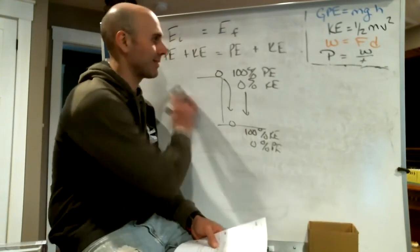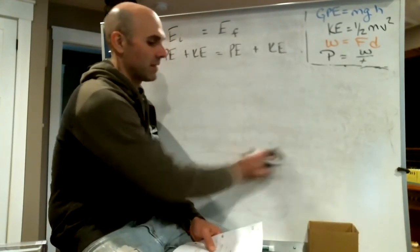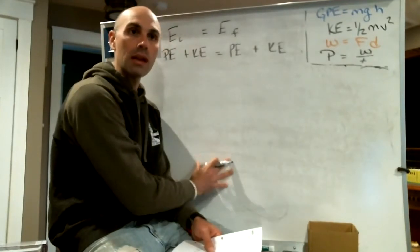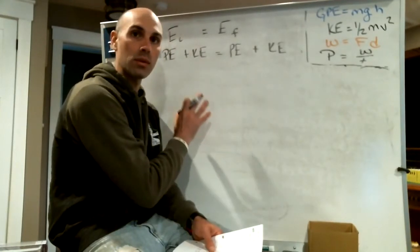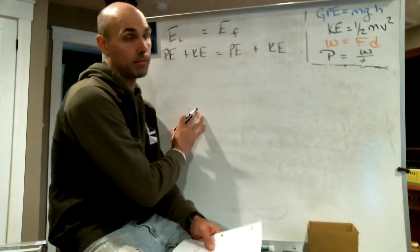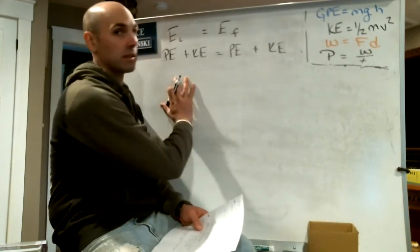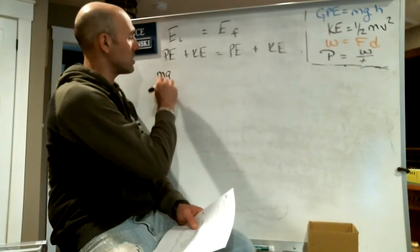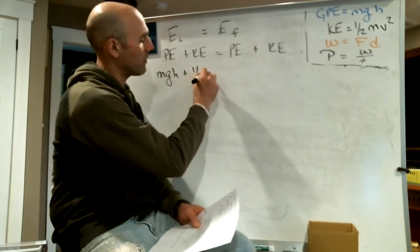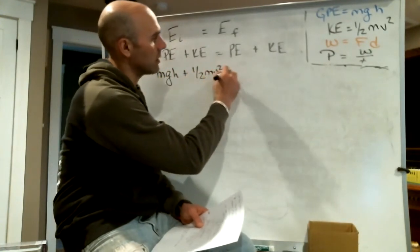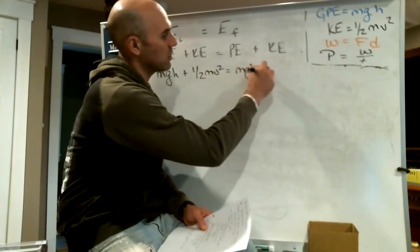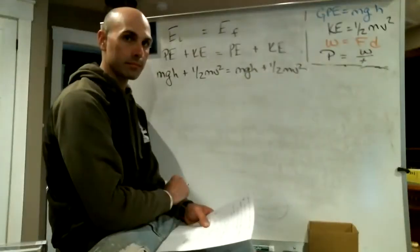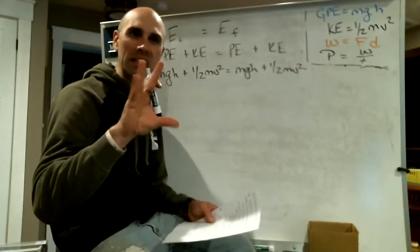I want to take you through an equation and then jump into an example. Let's break this down: mgh plus one-half mv squared equals mgh plus one-half mv squared.